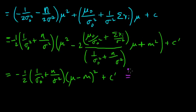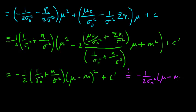We want to match this up with what a Gaussian exponent looks like. That's minus 1 over 2 sigma_n squared, times (mu minus the mean) squared — we'll call the mean m. There's going to be a constant, call it c prime. So the only thing we need is to take sigma_n squared to be 1 over this guy.